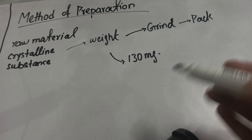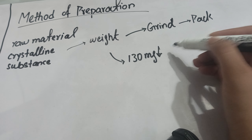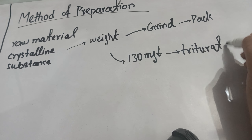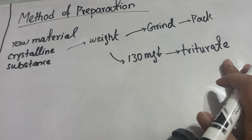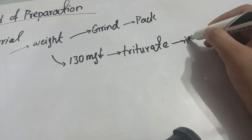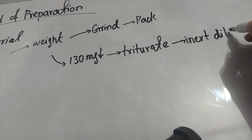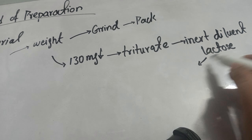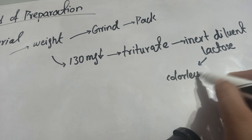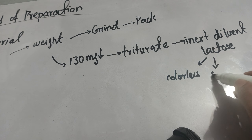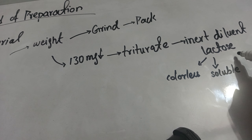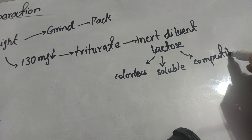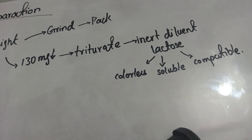If the weight of the drug is less than 130 mg, then you have to triturate it — trituration means to grind in the presence of an inert diluent. In this case the inert diluent will be lactose. We use lactose because of three benefits: first, it is colorless; second, it has very good solubility; and third, it is very good compatible.